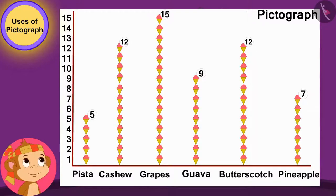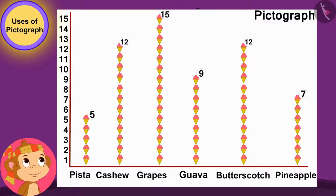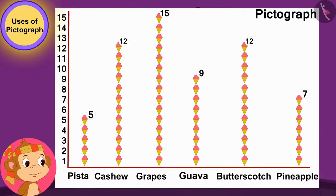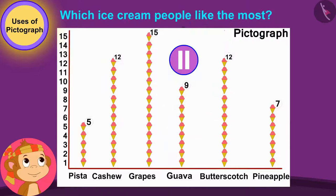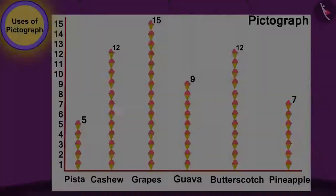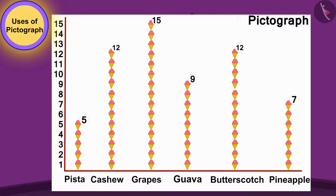Babban is trying to find out which ice cream people like the most by looking at his pictograph. Children, can you see the pictograph made by Babban and tell which ice cream people like the most? You can stop the video and find the answer. The grape ice cream line is the tallest, so we can easily find out that grape ice cream is liked by most people.